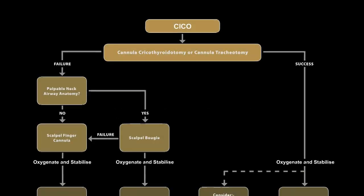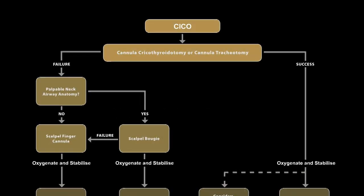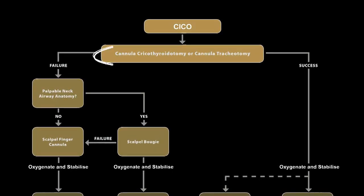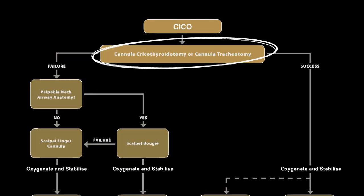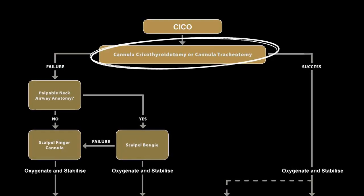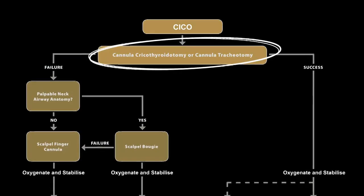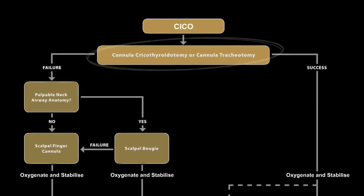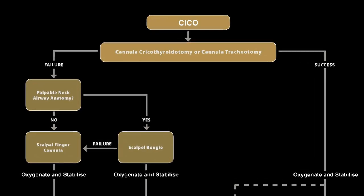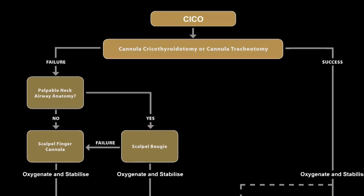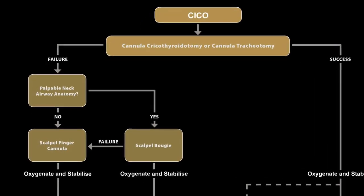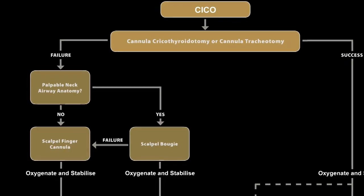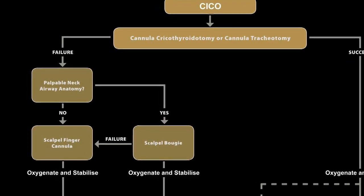In a can't-intubate, can't-oxygenate scenario, the anaesthetist should immediately undertake a cannula cricothyroidotomy or cannula tracheotomy to achieve safe, simple and fast oxygenation of the patient. If a cannula technique fails after a maximum of three attempts, or is not successful within one minute, whichever comes first, the anaesthetist should move to the left of the algorithm.